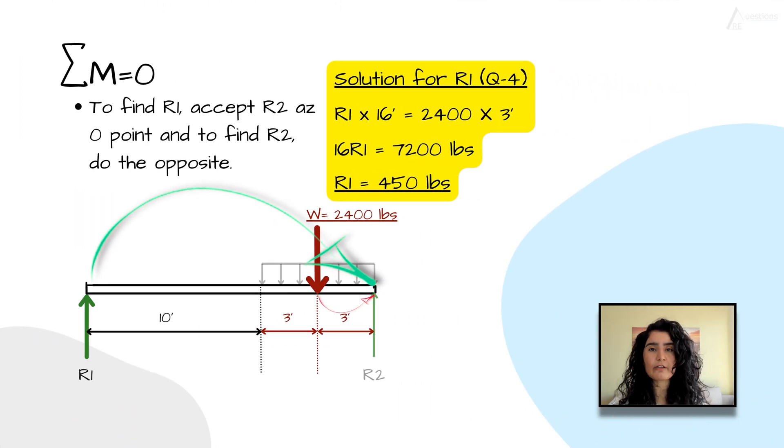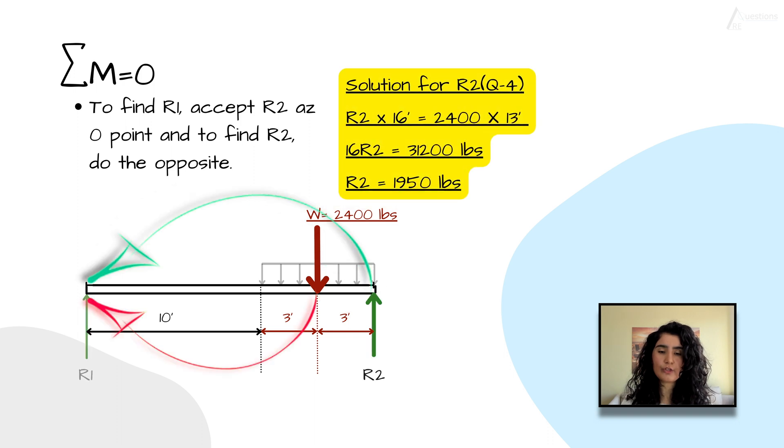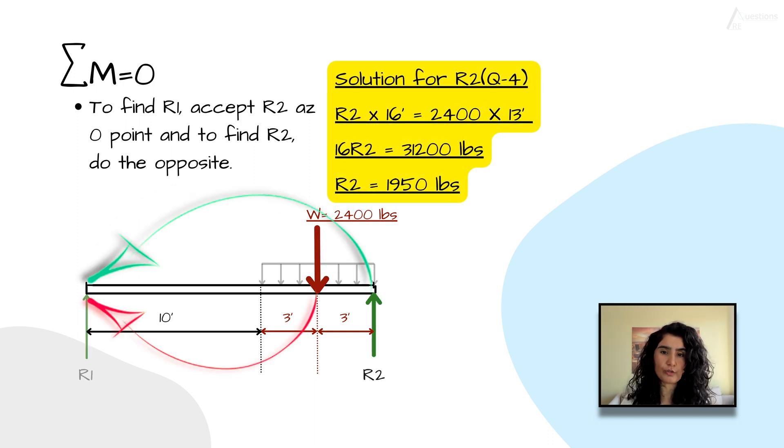Okay, now let's go back again. We have to calculate the moments to find R1 and R2, right? As usual, I start with R1. R1 is 16 feet away from R2, and W is only three feet away from R2. So I say R1 times 16 equals 2,400 times 3. If you solve R1 in this question, it's 450 pounds.